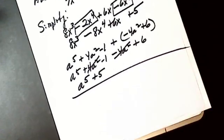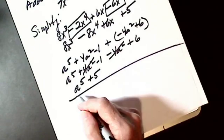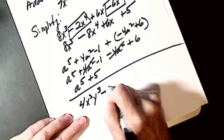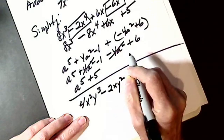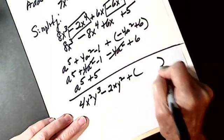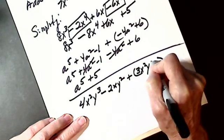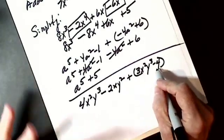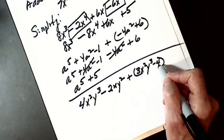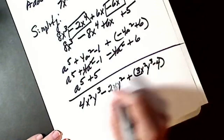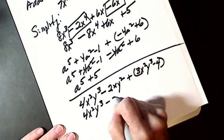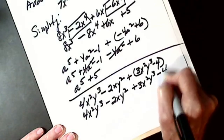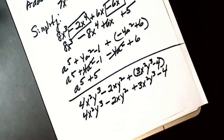The only time maybe it can get confusing is if I have bigger exponents. Let's say I have 4x squared, y cubed minus 2xy squared plus 3x squared, y cubed minus 4. First, I'm going to get rid of my parenthesis. You can think of it as a positive 1. You can distribute positive 1, where a plus just keeps everything the same. So it's 4x squared, y cubed minus 2xy squared plus 3x squared, y cubed minus 4. Everything stays the same. All I did was remove parenthesis.